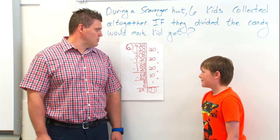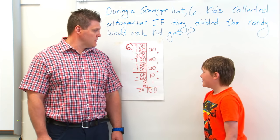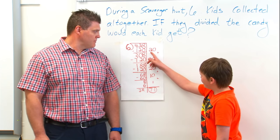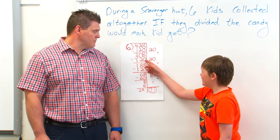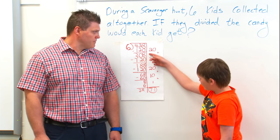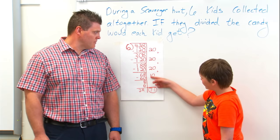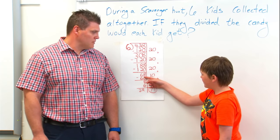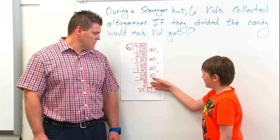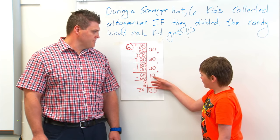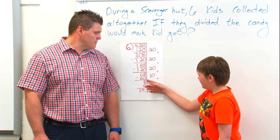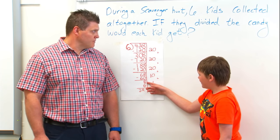Adrian, can you explain your solution to the class? Sure. I started with 20 times 6, which is 120. I subtracted that, which gave me 308. I kept on doing it until I got to 68. I can't do 20 anymore, so I had to do 10. So 10 times 6 is 60, and minus that gives me 8.